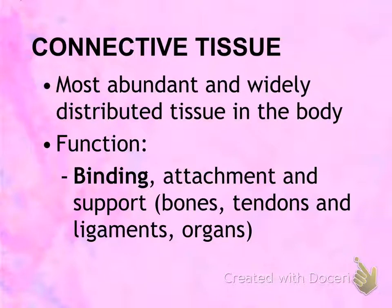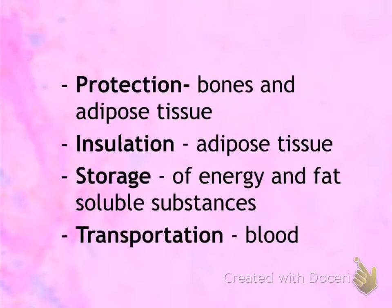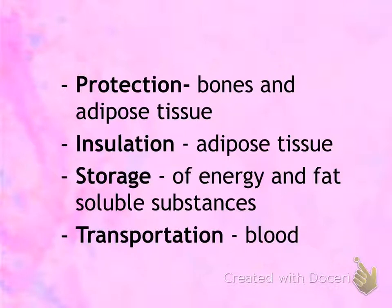One of those functions is binding, which means that they hold other tissues and organs together — and that's where they get the name connective tissue. Another function is protection. Tissue such as bone and adipose tissue has the job of protecting the body or organ. Insulation is another function, and that's the primary job of adipose tissue — insulation means it keeps your body warm.